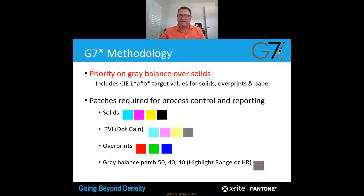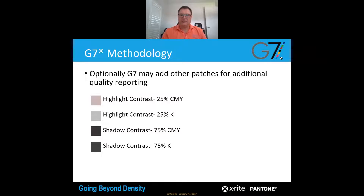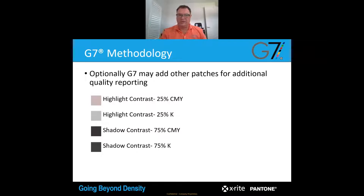G7 strives for neutrality. It also gives you the option to add optional patches: high contrast, 25% CMY, 25% K, 75% CMY, and 75% K — this is if you want to ensure that you are achieving that neutrality in production.